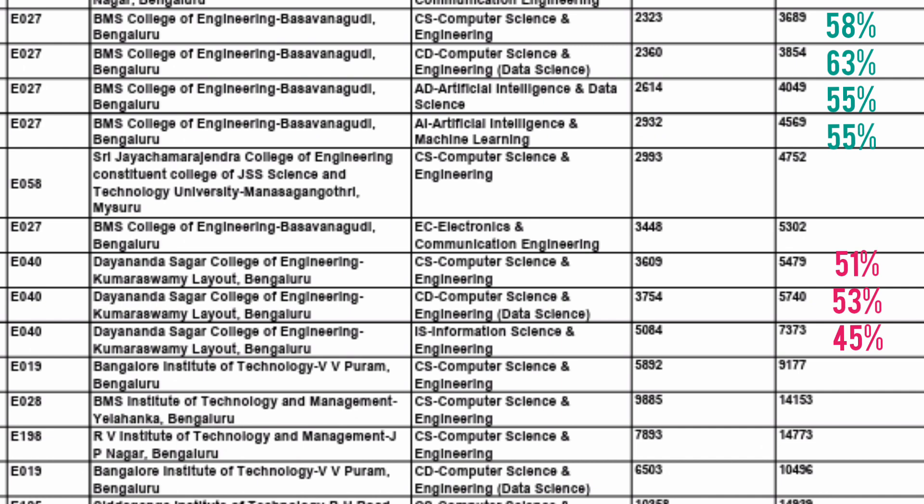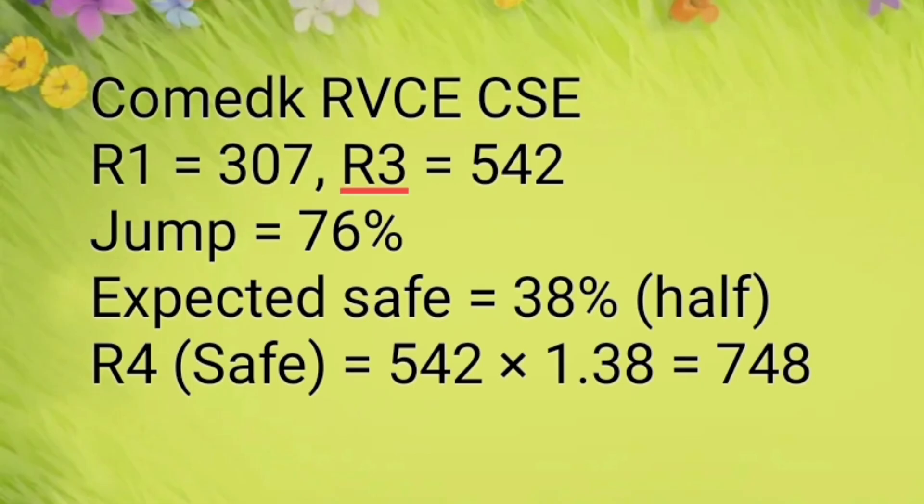That is why most of you would have got a good seat. But when you move from round 3 to round 4, the number of vacant seats will reduce significantly. Because of fewer vacant seats, the jump will not be as high as what you saw from round 1 to round 3 — it will be lesser. Most students have already done accept-and-upgrade or accept-and-freeze, so the number of vacant seats will be much less.